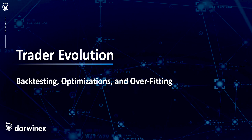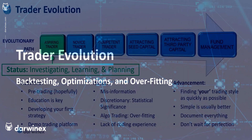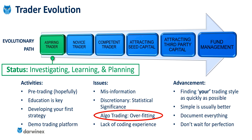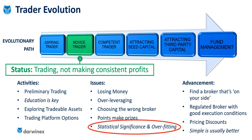If you've been following this series, you'll know that we've looked at the journey that traders take from the very beginning when they start to investigate trading, all the way through to when they're successful traders. The potential issues around backtesting and optimizations can start to play a part very early on in that cycle. For algo traders, overfitting as part of that optimization process is usually a common mistake. For discretionary traders, a different but related subject is that of statistical significance, which also quickly becomes a problem for algorithmic traders, often based around inadequate sample size of those optimization processes.